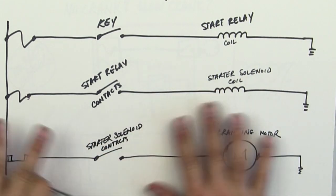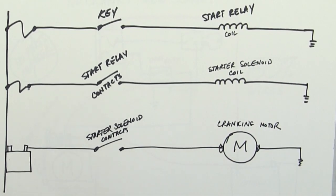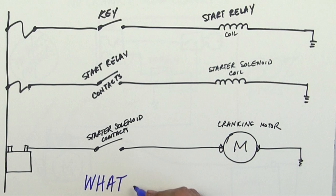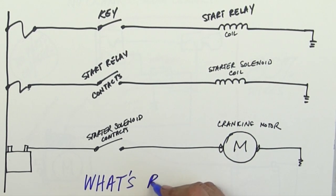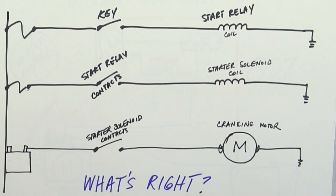So what we want to do is we want to rule out as many things that are working as possible. So what we're going to attempt to do is to find out what's working right. So the primary question we have to ask ourselves during any diagnostics for any electrical is what's right? What's working right? That's very important.